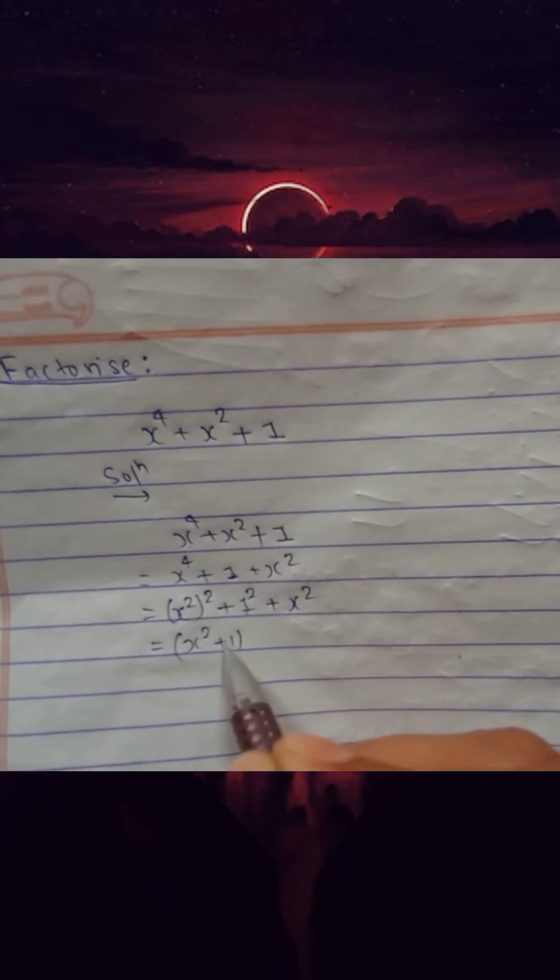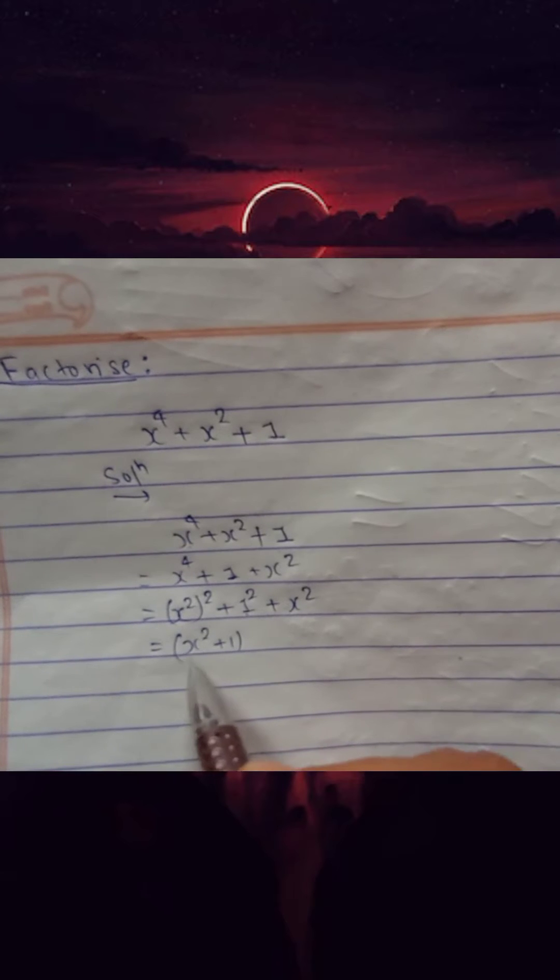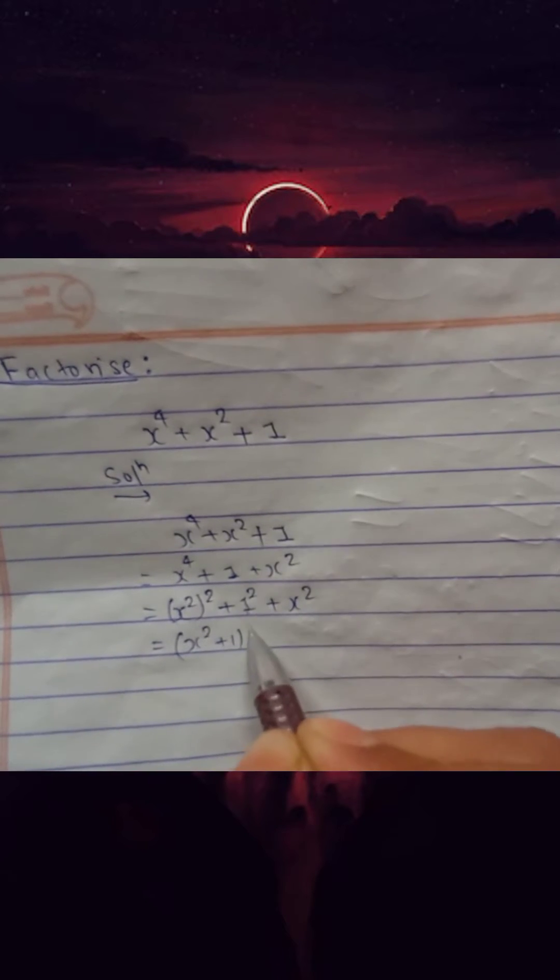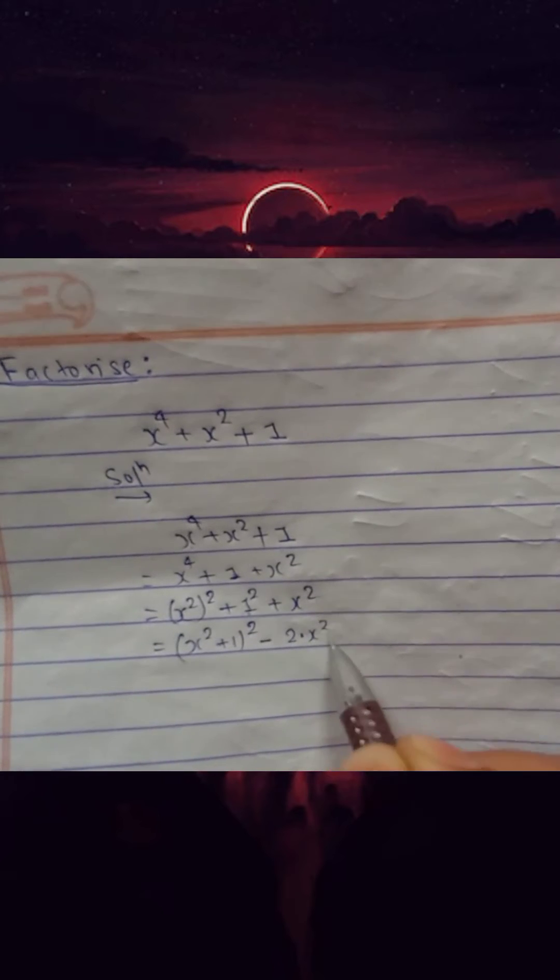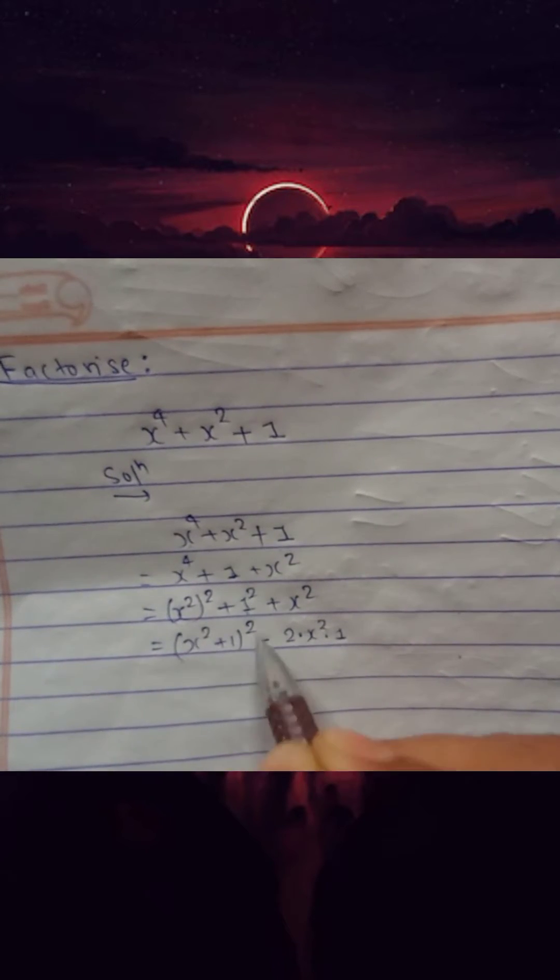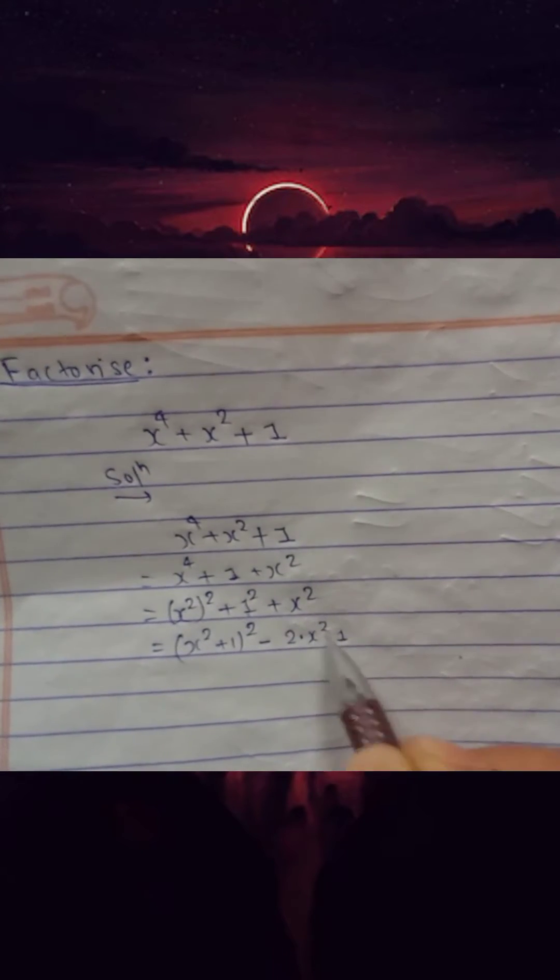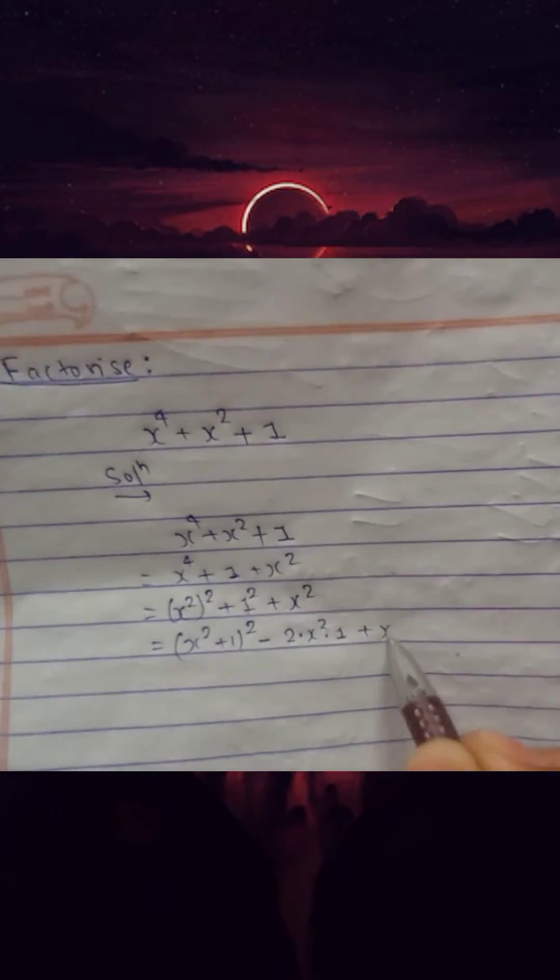In place of a we use here x square, and in place of b we use here 1. So that's a plus b whole square minus 2ab. We just use the formula here and this x square is here.